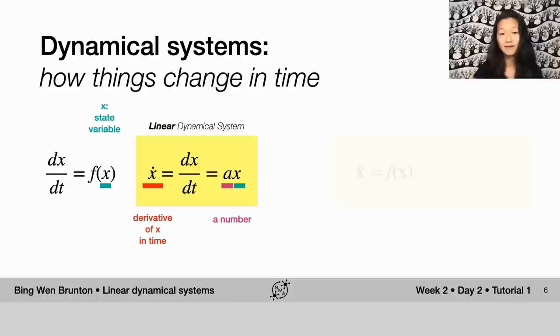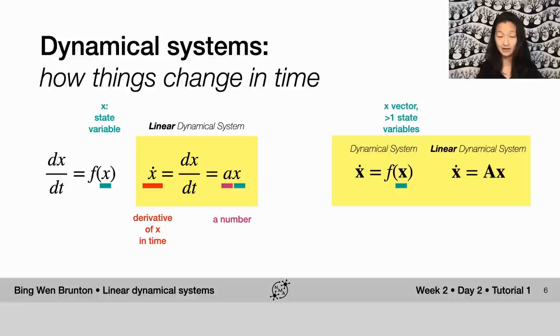Now, if x is not just a single state variable, but more than one state variable, we can express it as an x vector, a state vector. Again, the dynamical system could be written in a similar way, where every time you see a bold x, that means that x is a vector, has more than one state. And again, x dot equals f of x.